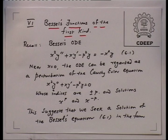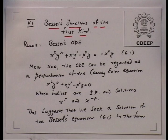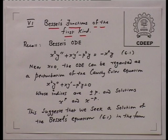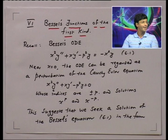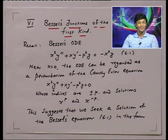Recall Bessel's ODE. What is Bessel's ODE? Equation 6.1: x squared y double prime plus x y prime minus p squared y equals minus x squared y. I have written this differential equation with the minus x squared y on the right hand side. As the differential equation suggests, the left hand side is a Cauchy-Euler equation which we completely understand, and the right hand side can be thought of as a perturbation term. So the Bessel's equation is a perturbation of the Cauchy-Euler equation.